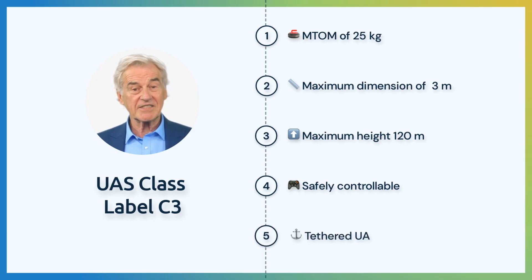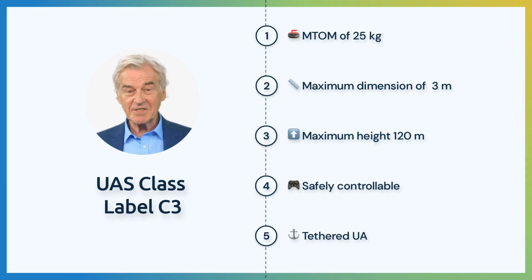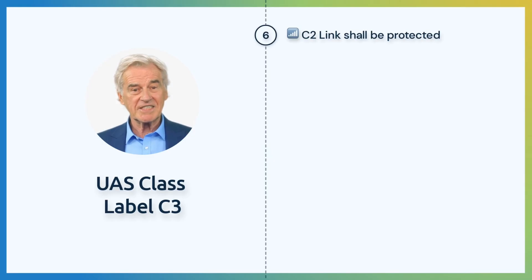In the case of a tethered UA, the manufacturer shall guarantee that the tensile strength with a security factor is under a certain value. The C2 link from the pilot to the UA shall be protected from unwanted third parties.